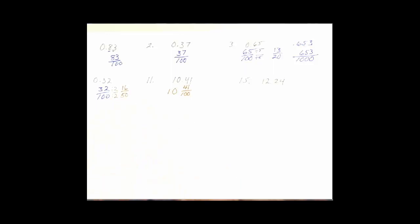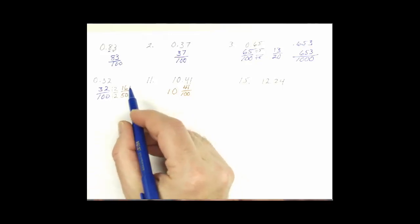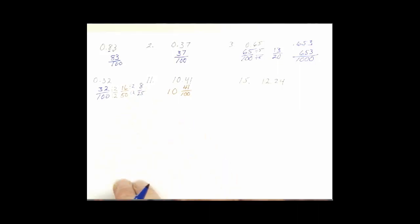But again, it's still both even. So I could have reduced it further. So again, they're both by 2. So that's 8 25ths. And at this point, we're done. We can't reduce any further.